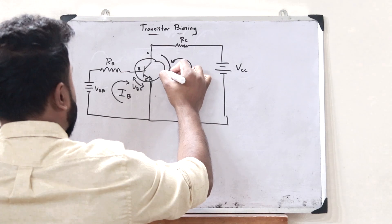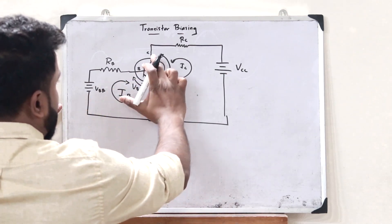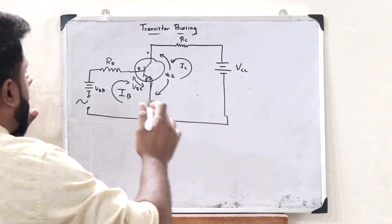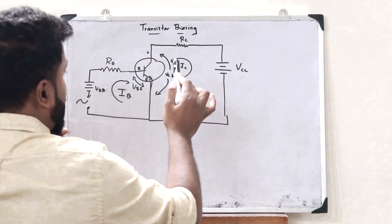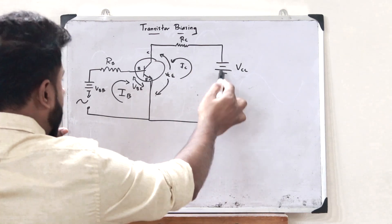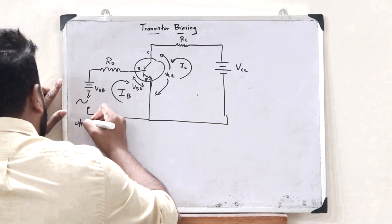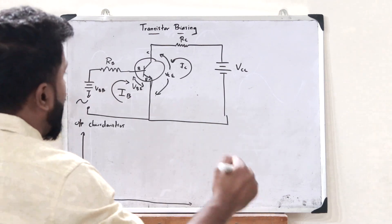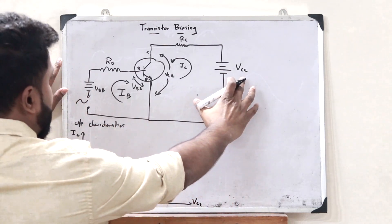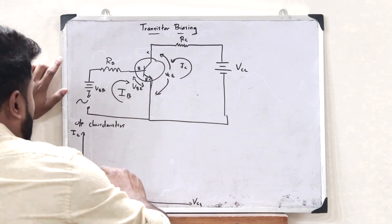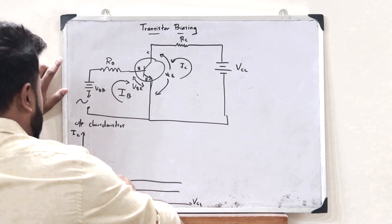Here, this is VBE and this is VCE. What we observe is that BE is forward biased, whereas CB is reverse biased. The parameters of the input side, that is VBE and IB, contribute towards the input characteristics, whereas the parameters on the output side, that is VCE and IC, contribute towards the output characteristics of this particular transistor. Let us now plot the output characteristics of this particular BJT, which is plotted between VCE and IC.